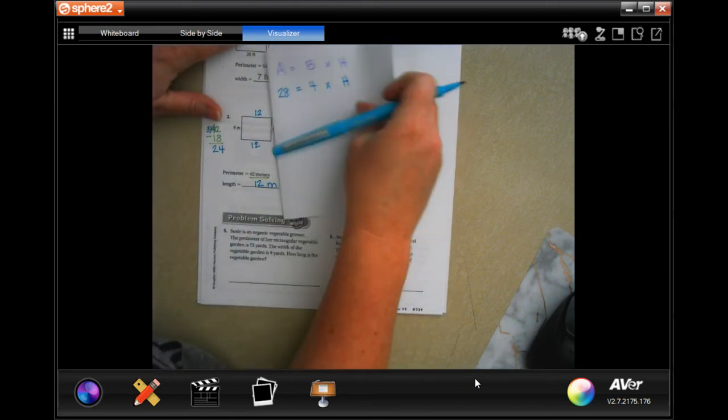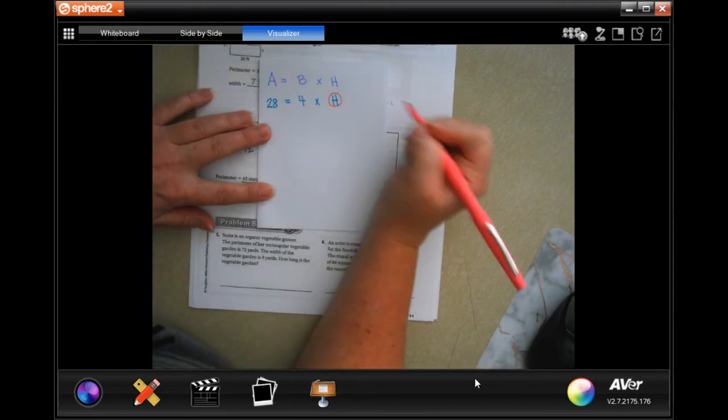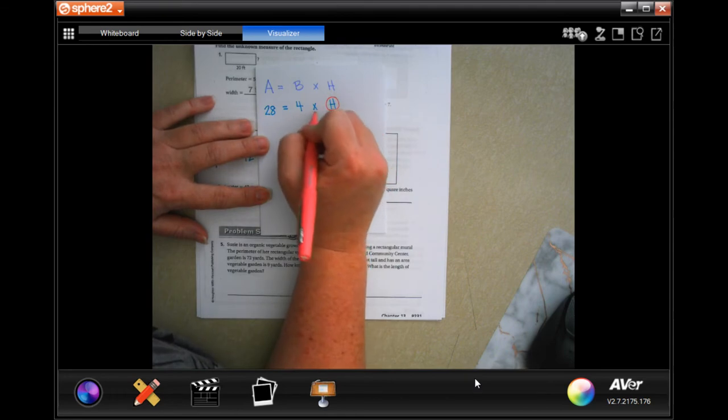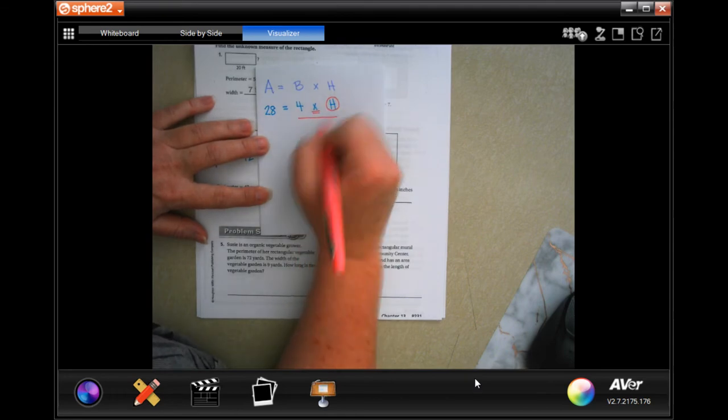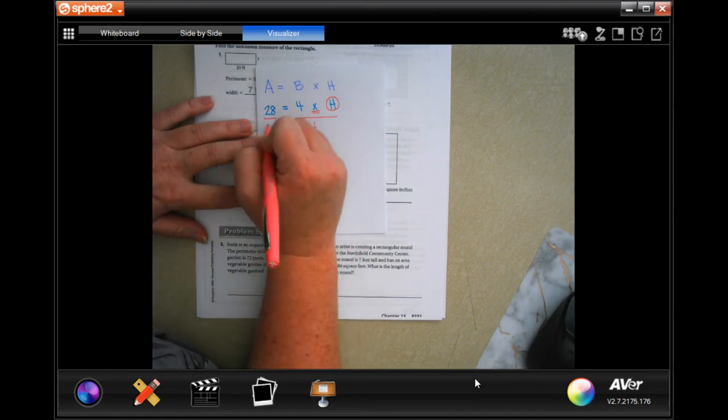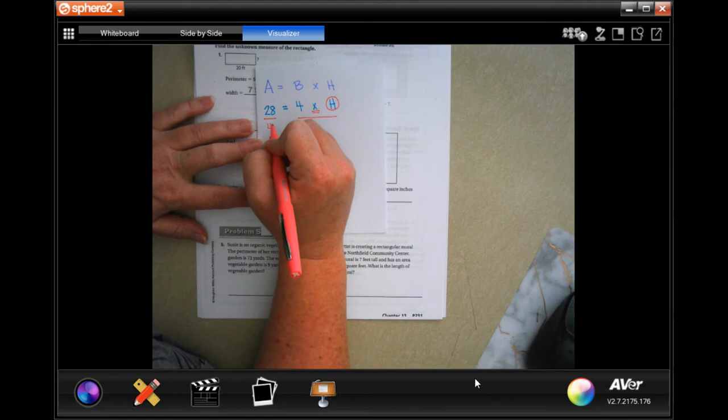Ready for a little bit of algebra, guys? So I need to get H alone to find out what the height is. In order to do that, I need to do the opposite of what the sign is, which is divide, and I need to do that by the numbers that's there. So now, whatever I do to this side of the equal sign, I have to do this side.